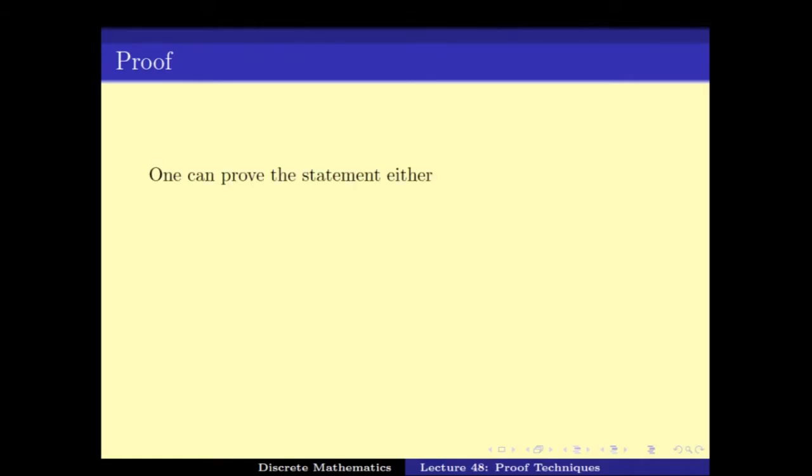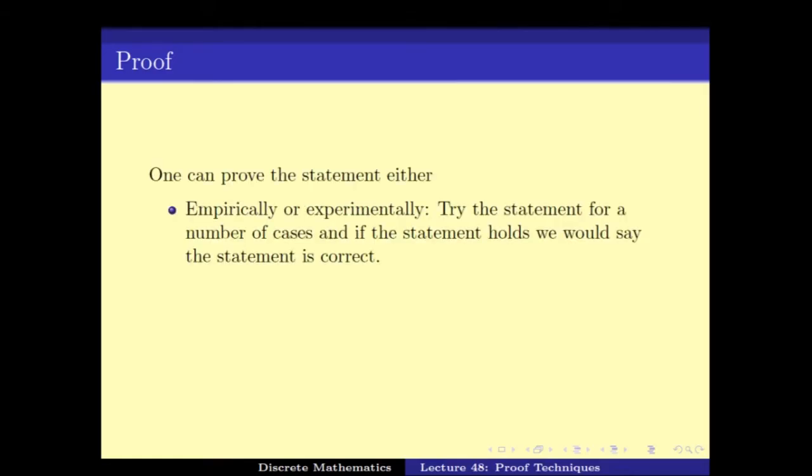The first way is to prove it empirically or experimentally. And the second one is a mathematical proof where we use mathematical reasoning to prove this statement.